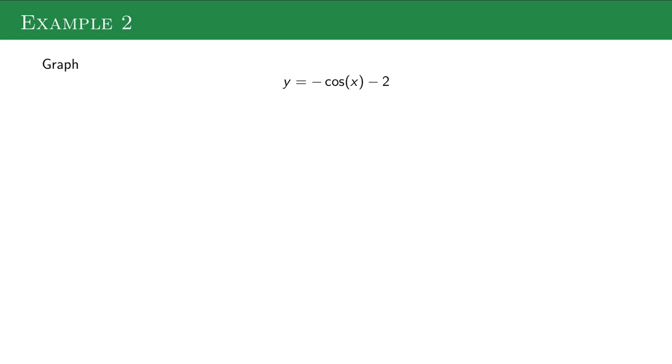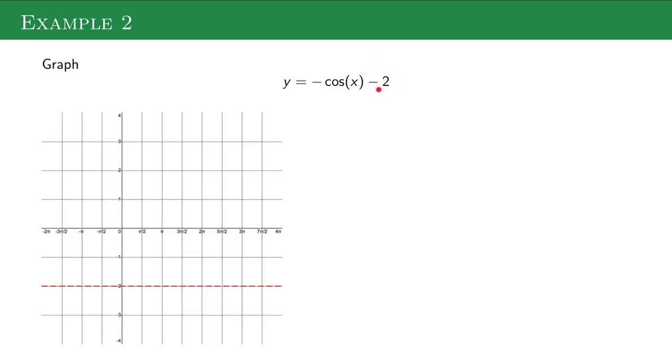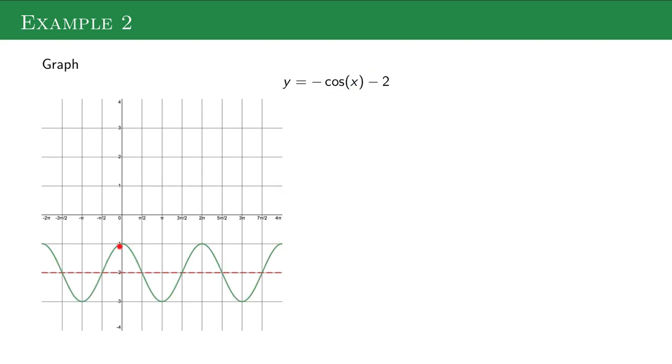All right, this one, I'm going to move my midline down to negative 2 because of this negative 2 here. I'm going to have my normal cosine graph, which again starts above the midline and then comes down. And this negative sign means my amplitude is a negative 1.